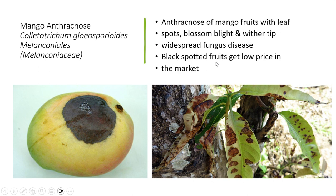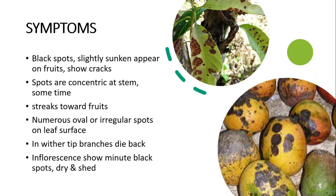Black spotted fruits get a low price in the market, making this the most important economic loss. The symptoms include black spots on fruits which are slightly sunken, and cracks show them. Spots are concentric at the stem. On the leaves, numerous oval and irregular spots appear on the leaf surface.